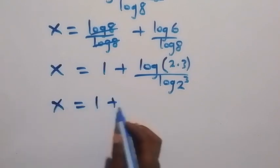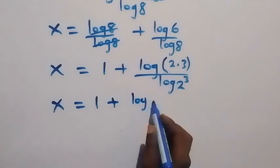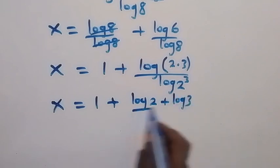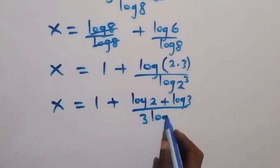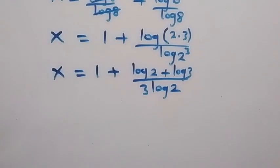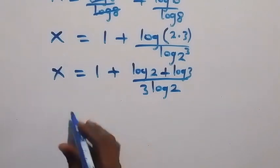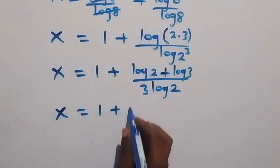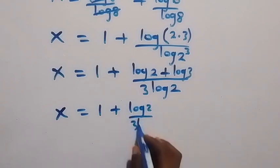So we have x equals 1 plus log(2×3) over log(2³). When we separate log(2×3) into two logs we have log 2 plus log 3. In the denominator, applying the power law of logarithms, log(2³) becomes 3 log 2. We then separate these into two fractions, so x equals 1 plus log 2 over 3 log 2.